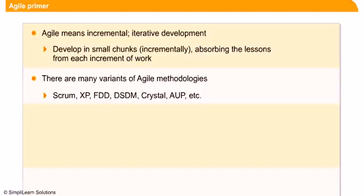Crystal Clear is a member of the Crystal family of methodologies and is considered a lightweight agile methodology. AUP — Agile Unified Process — is a simple, easy-to-understand approach for developing business application software using agile techniques, applying test-driven development, agile modeling, agile change management, and database refactoring to improve productivity. For this introductory course, however, we will focus on Scrum in detail.